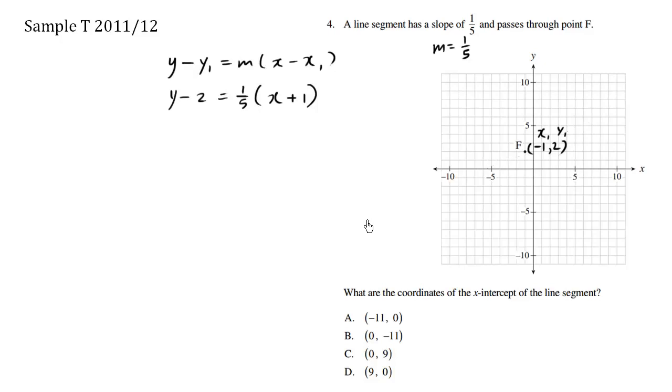We want to know exactly where the x-intercept is. The x-intercept means where y equals zero. The opposite variable equals zero. x-intercept means y is zero. So what is that coordinate?